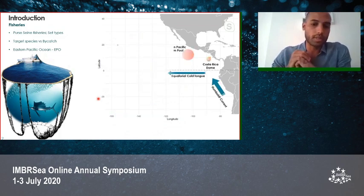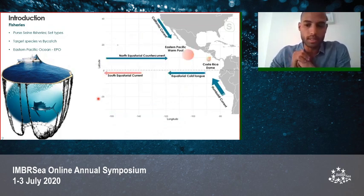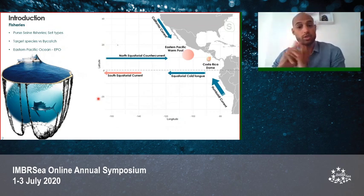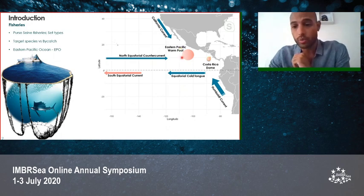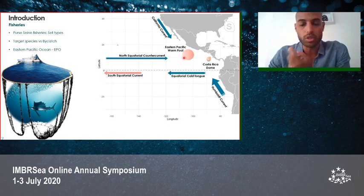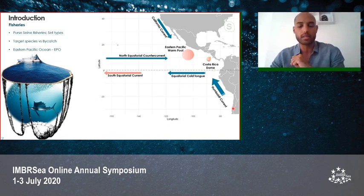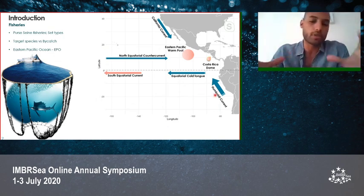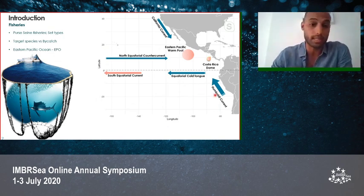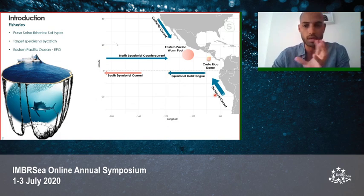This fishery is developed in the Eastern Pacific Ocean, our study area, which has diverse oceanographic features such as the California Current, the Humboldt Current, the equatorial current system, the Western Pacific warm pool, the Costa Rica Dome, and is also the main area affected by the El Niño effect. All these features make this a very complex and dynamic oceanographic region.